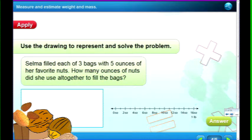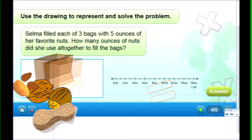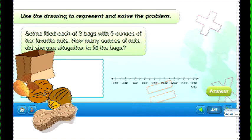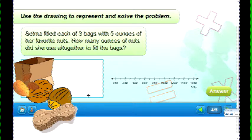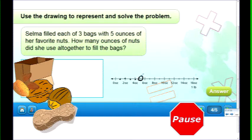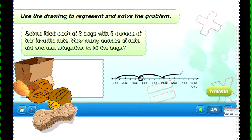Next problem. Silma filled each bag, each of three bags with five ounces of her favorite nuts. So she has three bags. And she fills them up with almonds, walnuts, peanuts, and hazelnuts. And pralines or some other nuts. How many ounces of nuts did she use altogether? If there's five ounces, how much did she use? With one bag, it was one, two, three, four, five ounces. But she had three bags. Can we count by fives? Five, ten, eleven, twelve, thirteen, fourteen, fifteen. How many of you think that's the answer? Fifteen ounces. And there's how you can do it. Five, ten, fifteen.